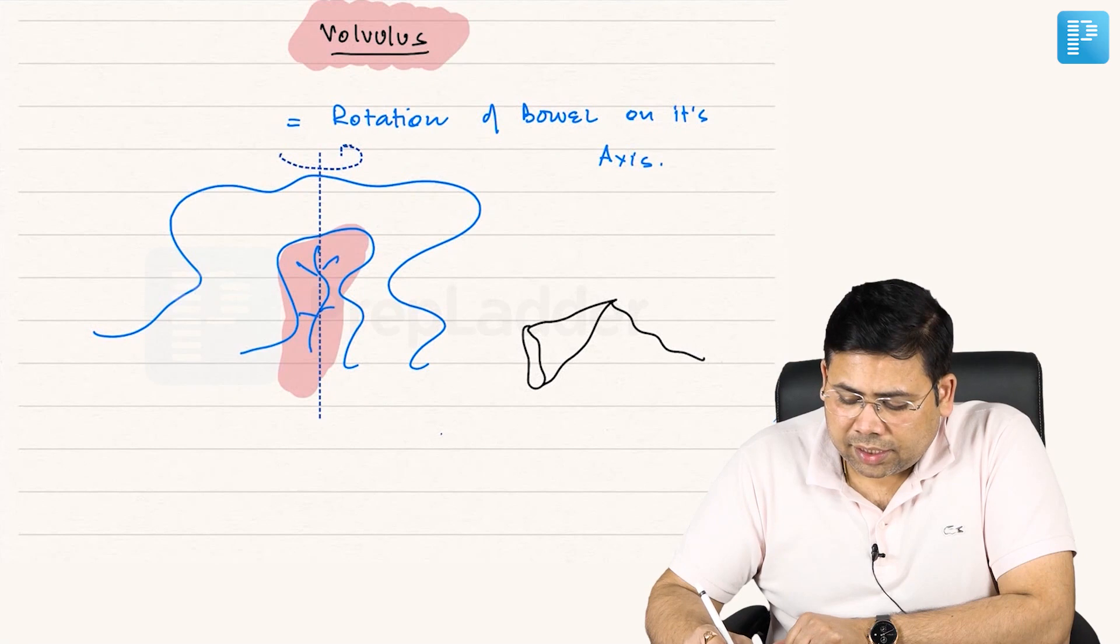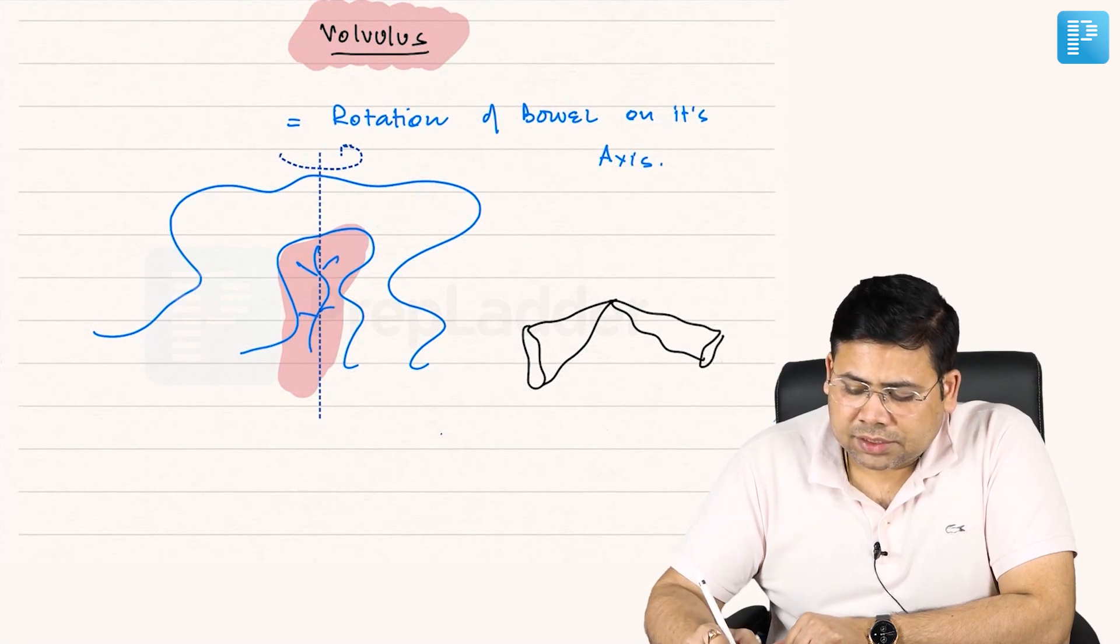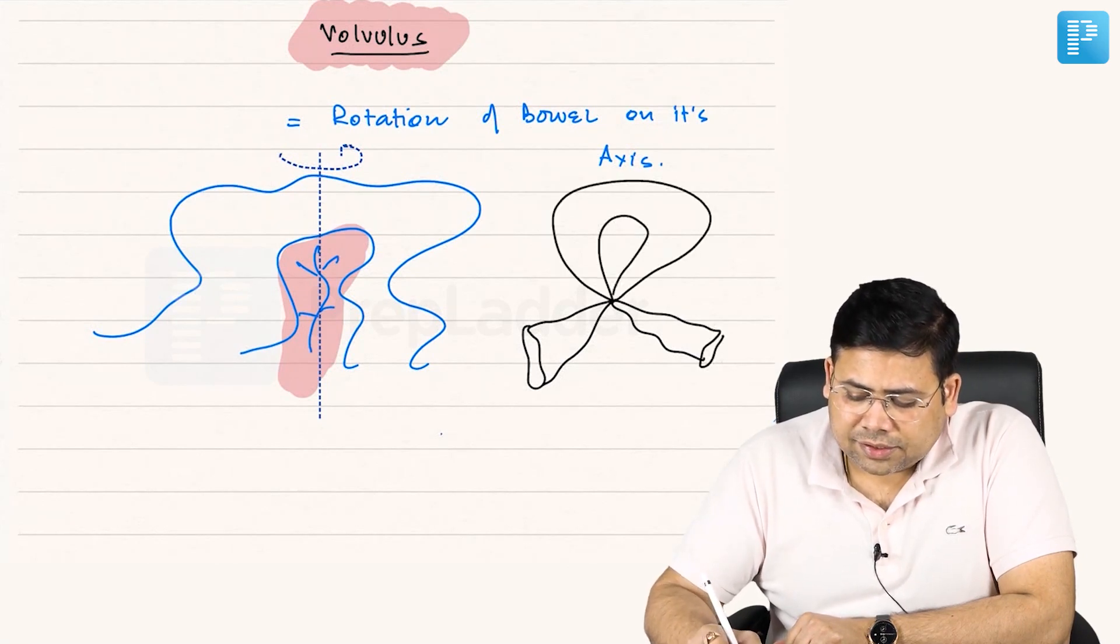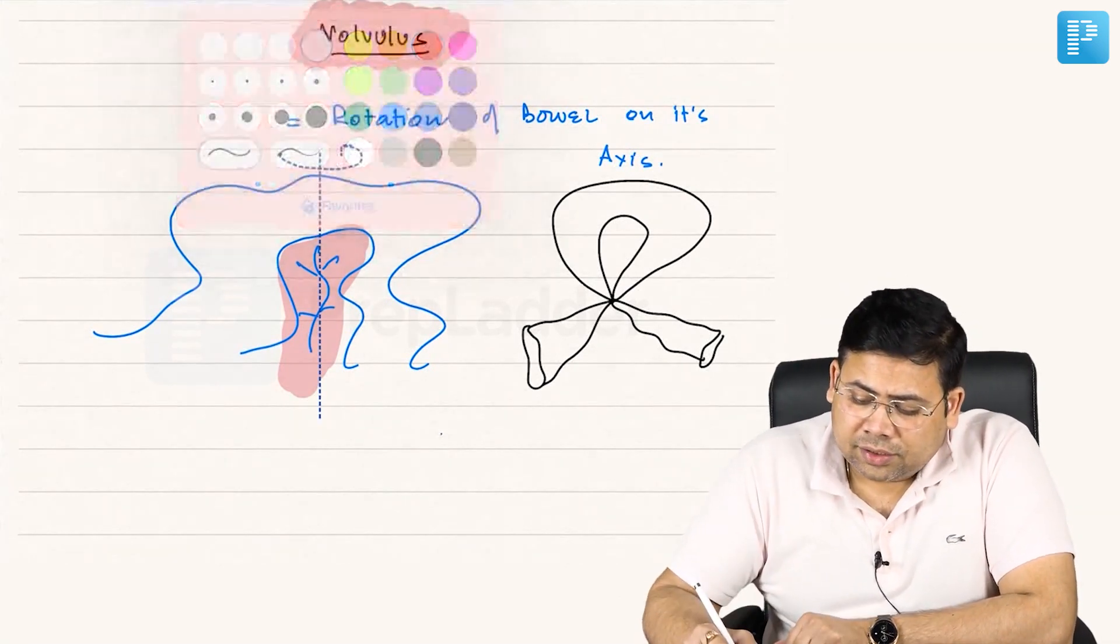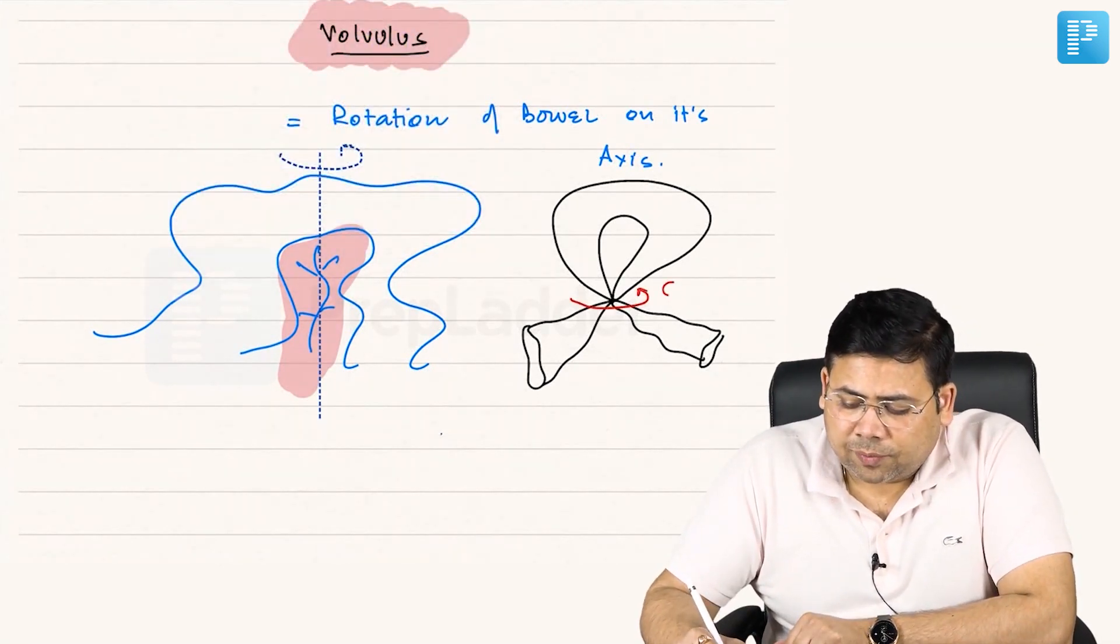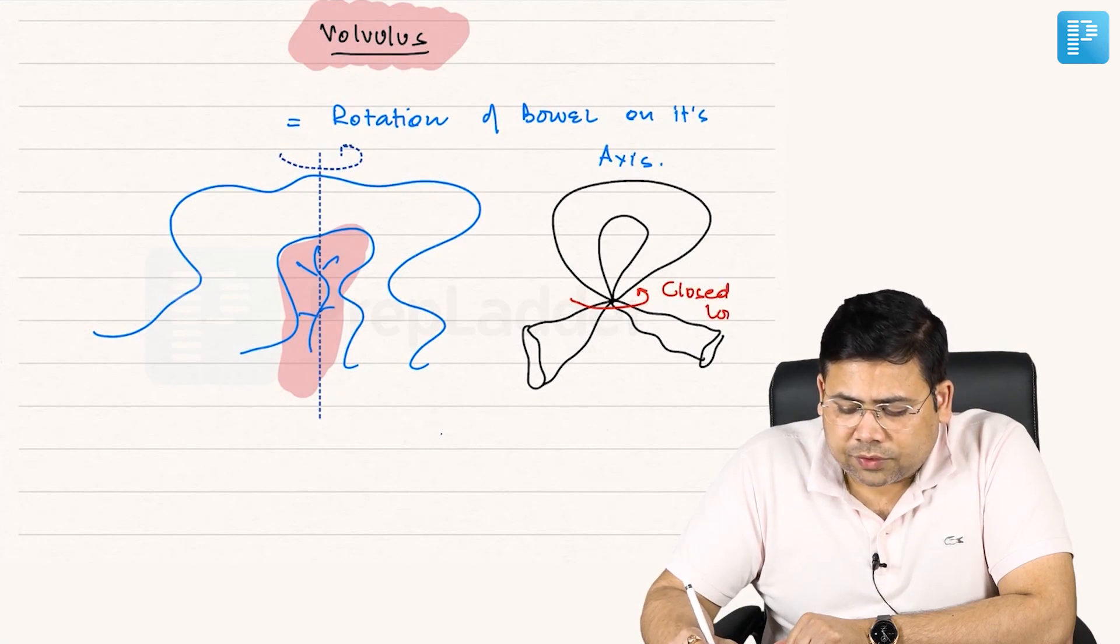There is a twist at the level of this mesentery and this has resulted in a closed obstruction. If you see, this is a closed intestinal obstruction, this is a closed loop obstruction.